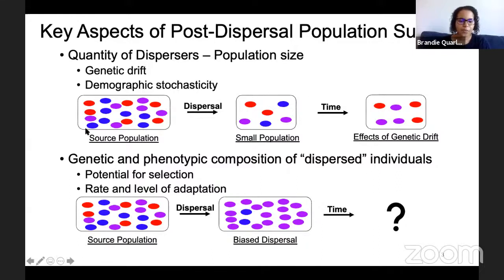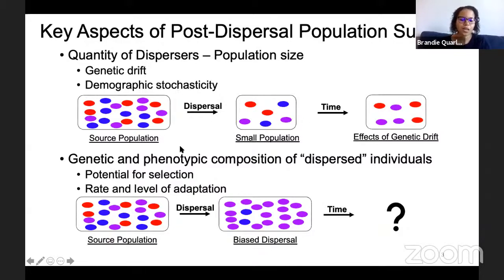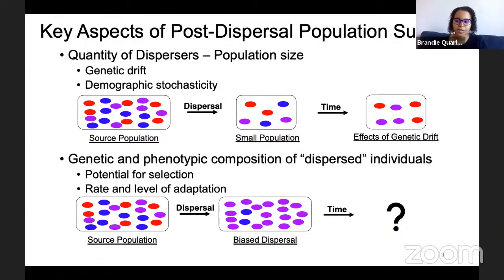Some key aspects of post-dispersal are the quantity of dispersers and the genetic and phenotypic composition of dispersed individuals. The quantity of dispersers is going to influence population size and then influence the strength of genetic drift and demographic stochasticity. Here in this top example, I'm showing you a source population that has a good size — population size is denoted by the rectangle — and a good starting mix of genetic variation denoted by the different colors of the circles. After dispersal, if you get a small population, genetic drift may be really strong and you may lose some of that genetic variation by chance.